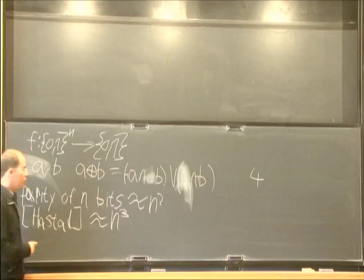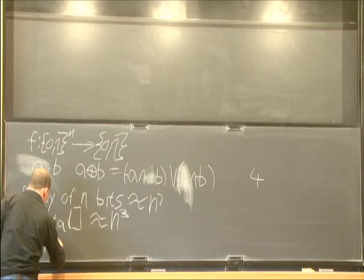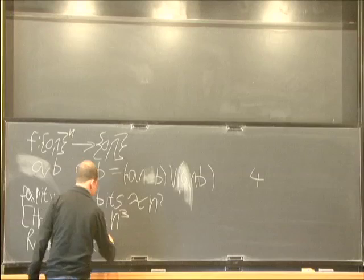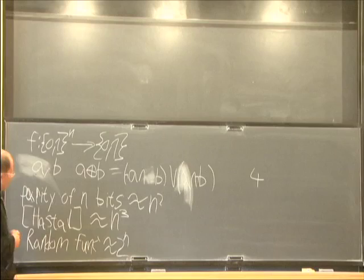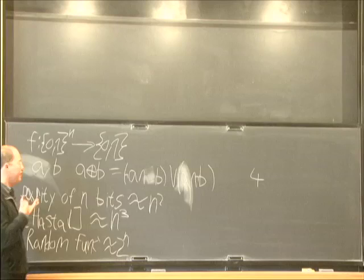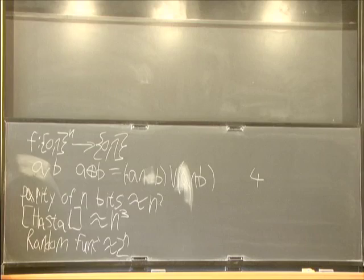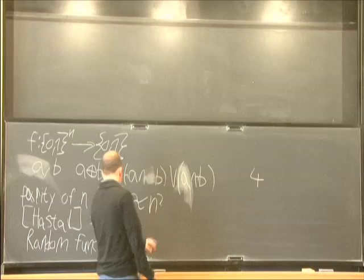However, for a random function on n bits, we know that the formula complexity is about 2 to the n, which is considerably larger. But this result is not very satisfying for us, because a random function is not a function we really know how it looks. It's not a concrete function. It's not an interesting function, I would say. What we would really like is to show hardness for explicit functions, functions that we can actually describe and tell how they look like. And closing this gap, or even narrowing it just by a bit, is a major open question of computational complexity theory.